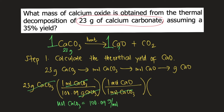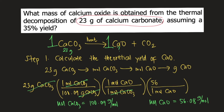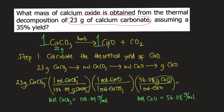Finally, convert moles of calcium oxide into grams of calcium oxide. You need the molar mass of calcium oxide, which is 56.08 grams per mole. Put one mole of calcium oxide at the bottom and 56.08 grams on top, so moles of calcium oxide will cancel and your final unit is grams of calcium oxide. Plugging this into your calculator gives the theoretical yield of calcium oxide, which is equal to 12.89 grams.